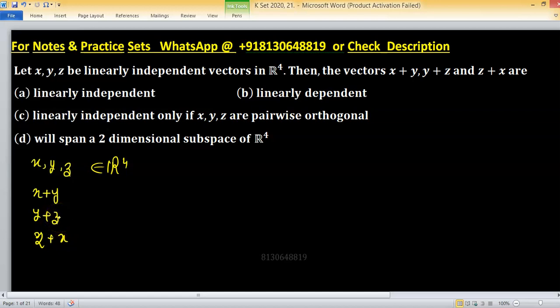Linearly independent, dependent, or independent only if x, y, z are pairwise orthogonal, or these three will span a two-dimensional subspace of R4. So there are four types of situations you have to face as given in options.